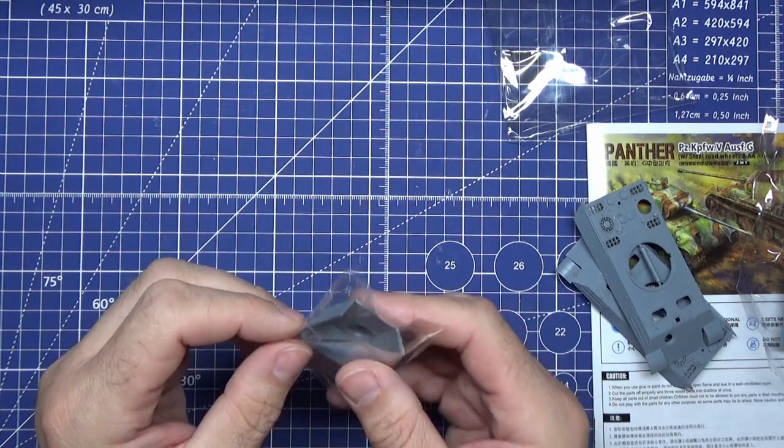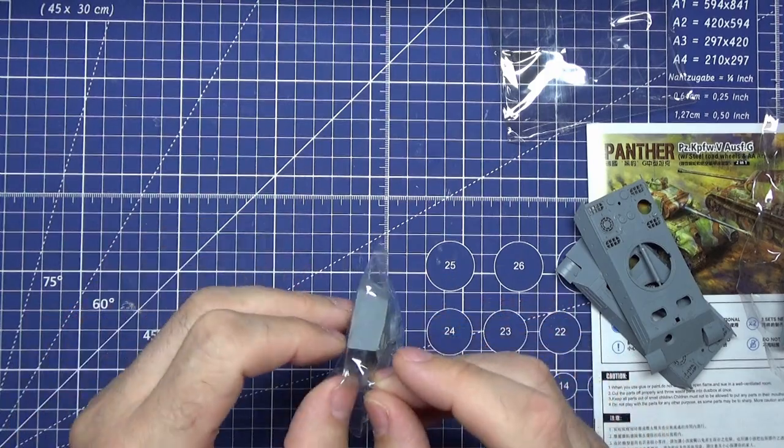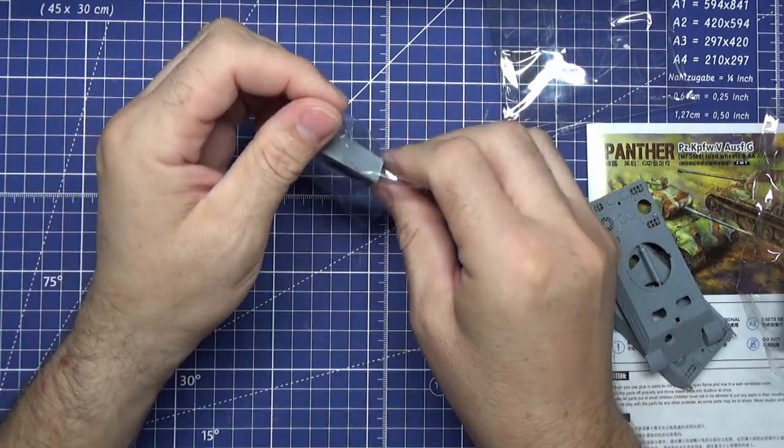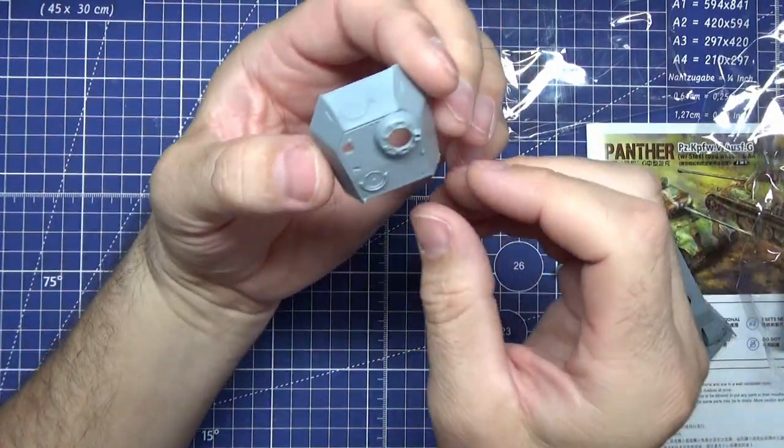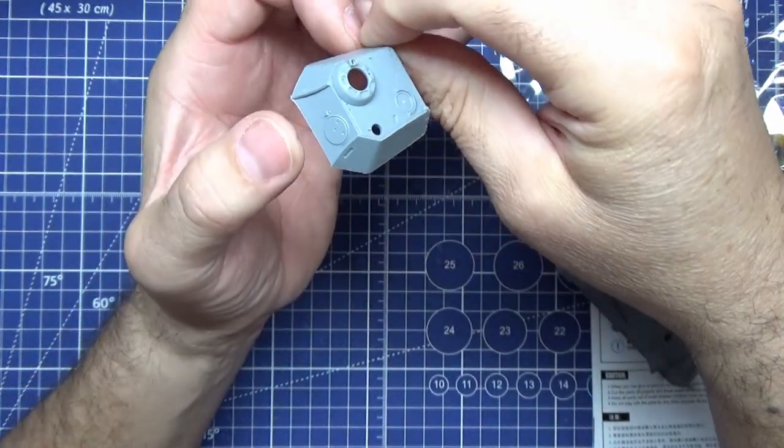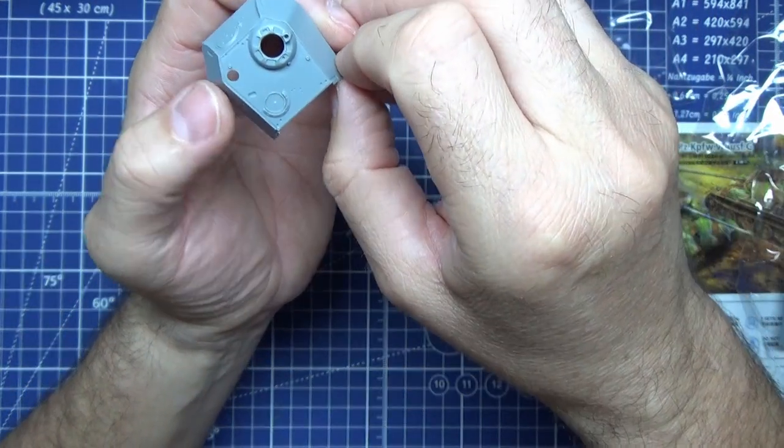And here we have one little baby turret. Come on, coming out to play, here we go. Yeah, tiny. One little turret.